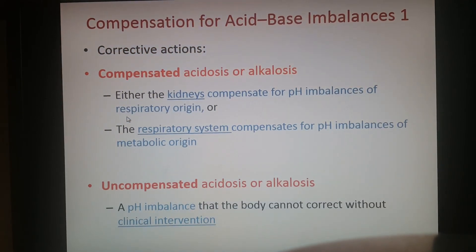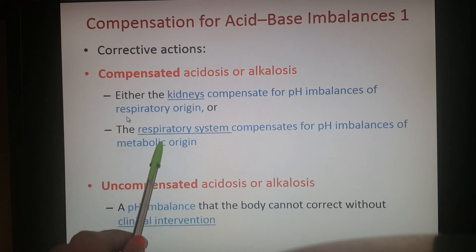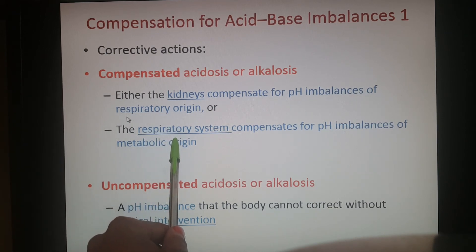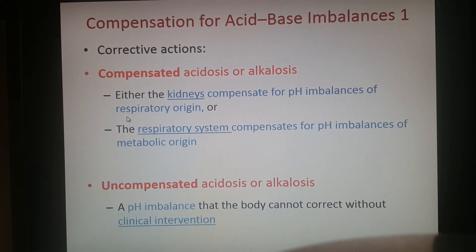To correct these conditions, the kidneys compensate for pH imbalance from a respiratory origin, and the respiratory system compensates for imbalance from a metabolic origin. Basically, they help each other out if one isn't functioning correctly. If no compensation or adjustment is made, clinical intervention is needed to keep pH balanced.